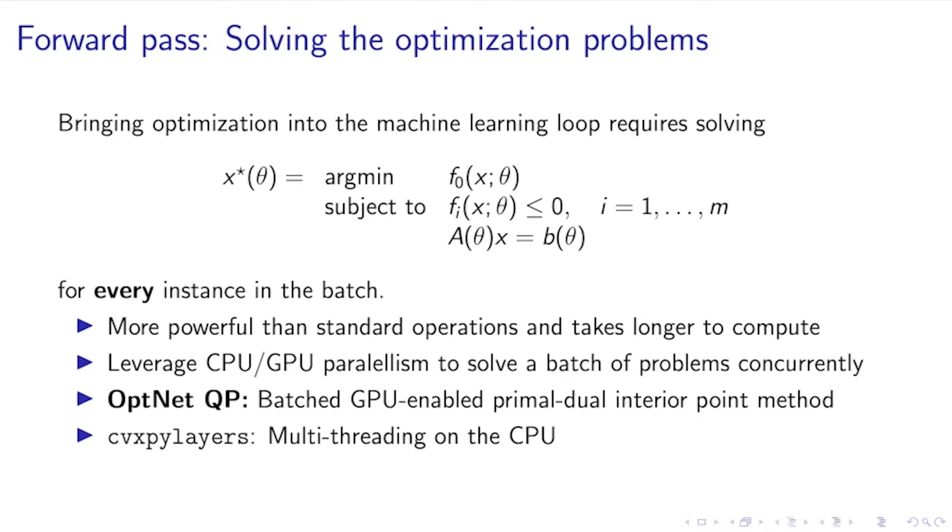One competitive alternative that we've switched to using in the differentiable CVXPyLayers project is that we're just using multi-threading on the CPU and calling into an off-the-shelf solver with the global interpreter lock disabled in Python so that we can leverage large core CPUs and the extremely fast and specialized solve times of some of the standard cone solvers or quadratic programming solvers.